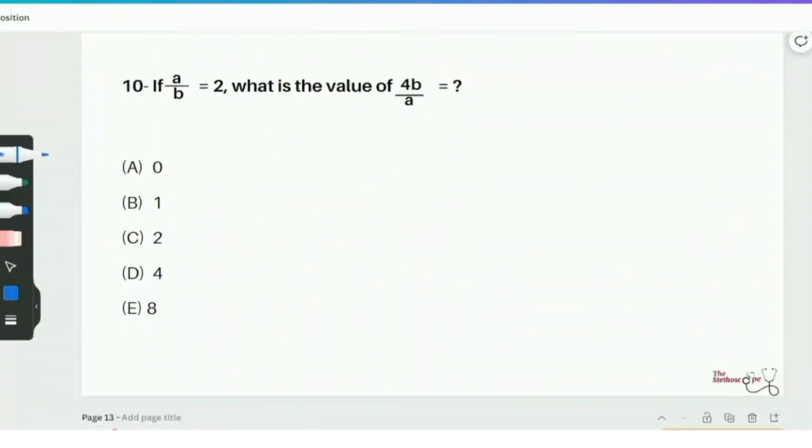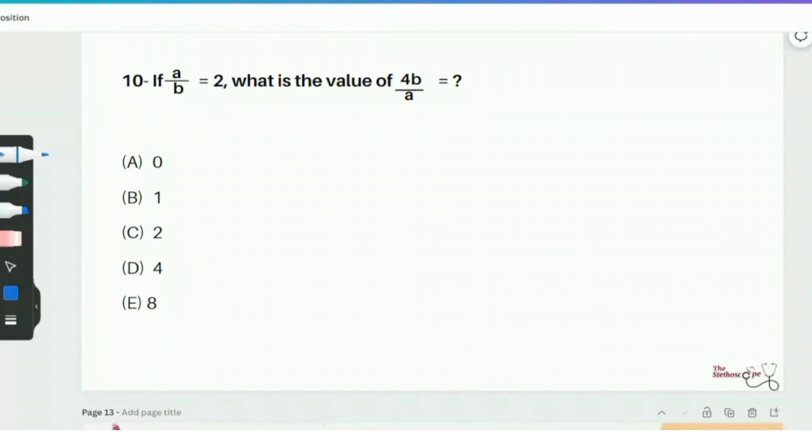Then we have question number 10. That's the last question of this session. It says that if a over b equals 2, what is the value of 4b over a? Well, I've noticed that I have b over a here in this question, which is the reciprocal of what is given to me a over b. So if I take reciprocal both sides of this equation, I get b over a equals 1 over 2. So if I rewrite this here, it's going to be 4 times b over a.